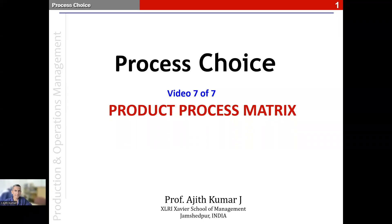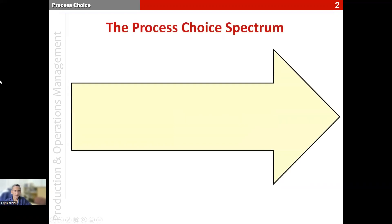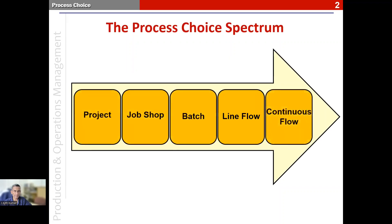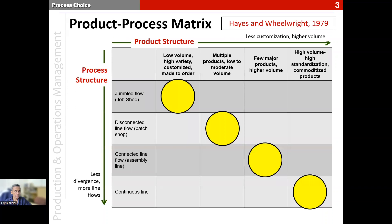This is the seventh and final video of a series of seven videos on process choice. In this video we look at what is known as the product-process matrix. In the previous videos we have seen the five types of processes listed on the process choice spectrum, and now we look at the product-process matrix. This matrix has four rows and four columns.